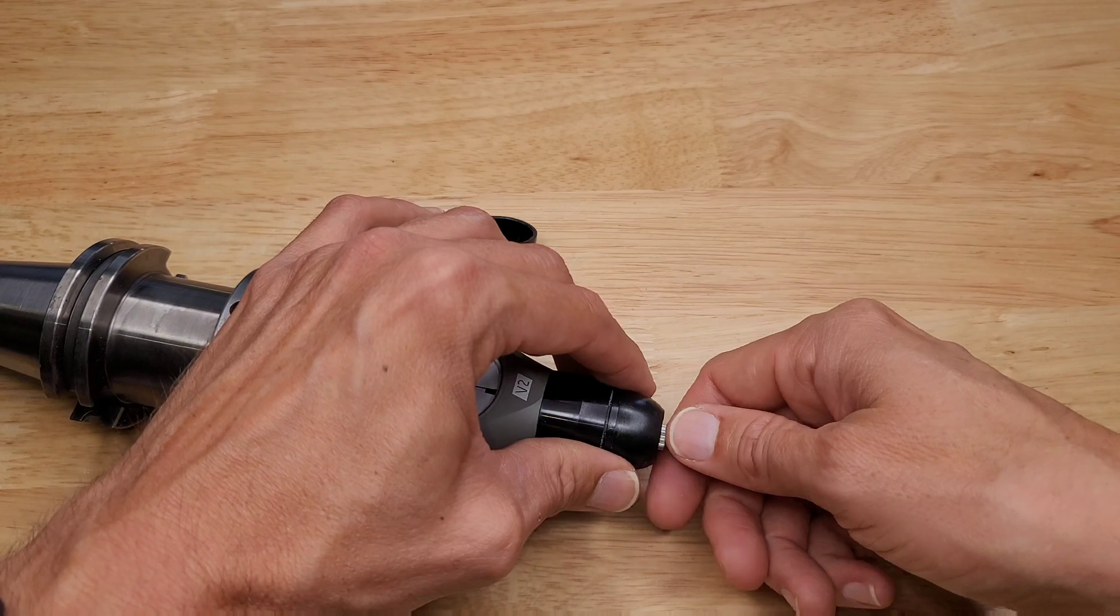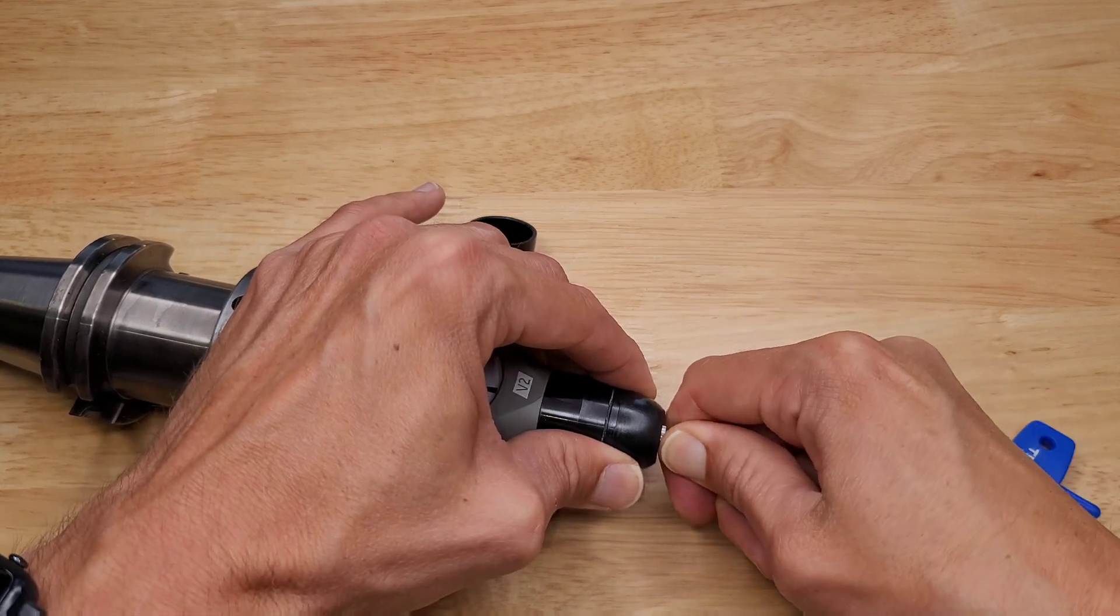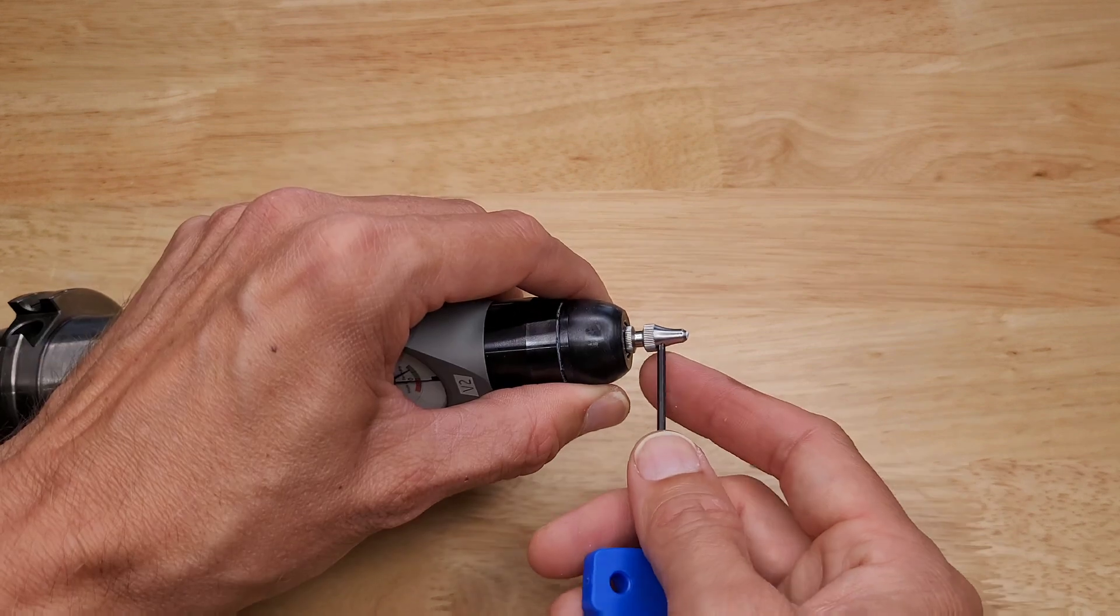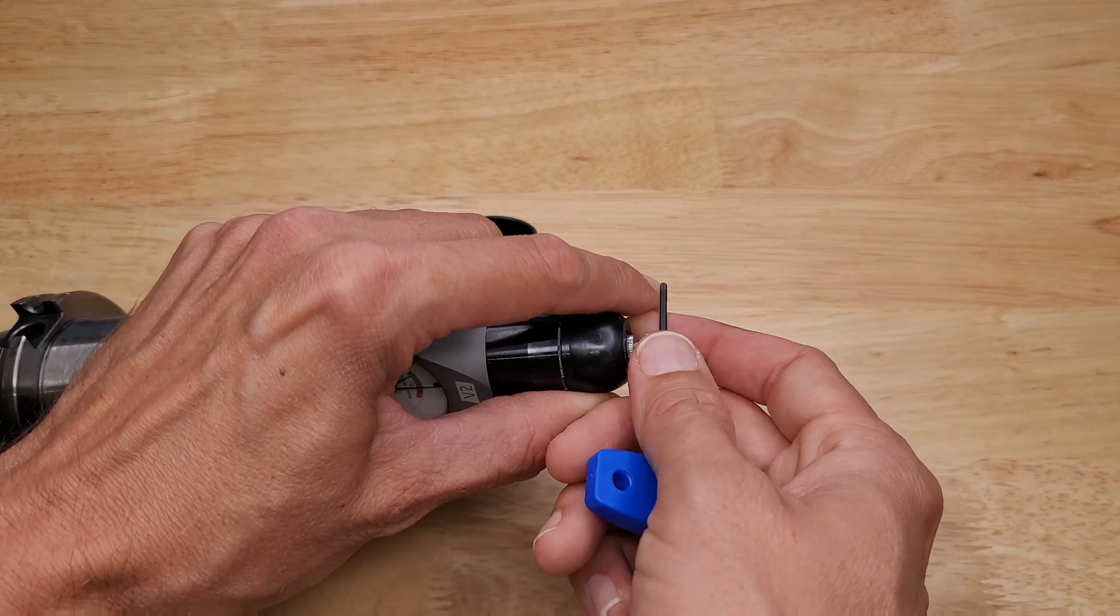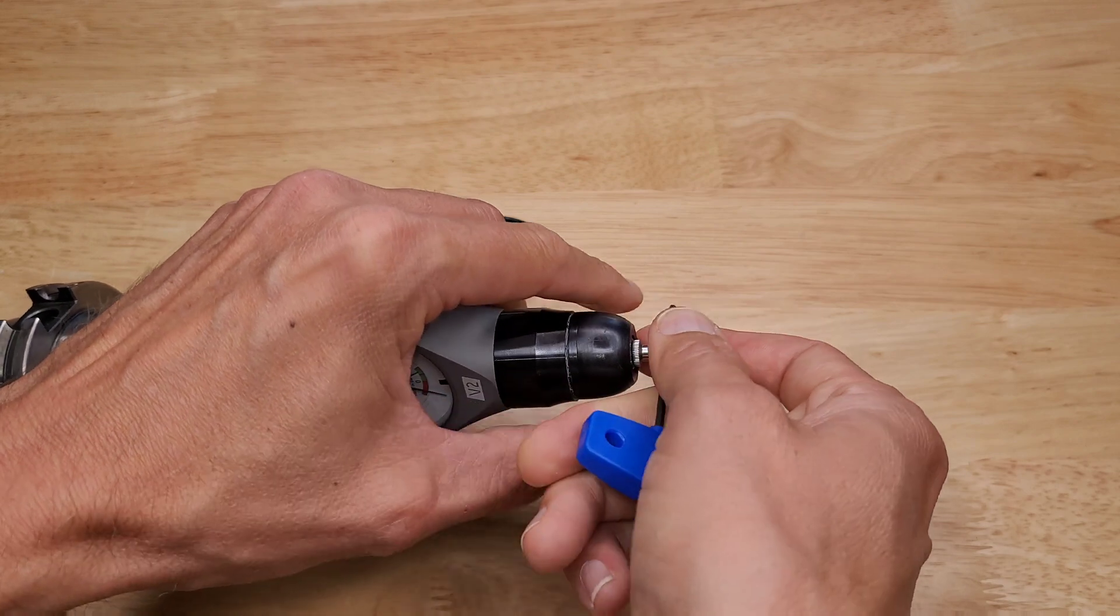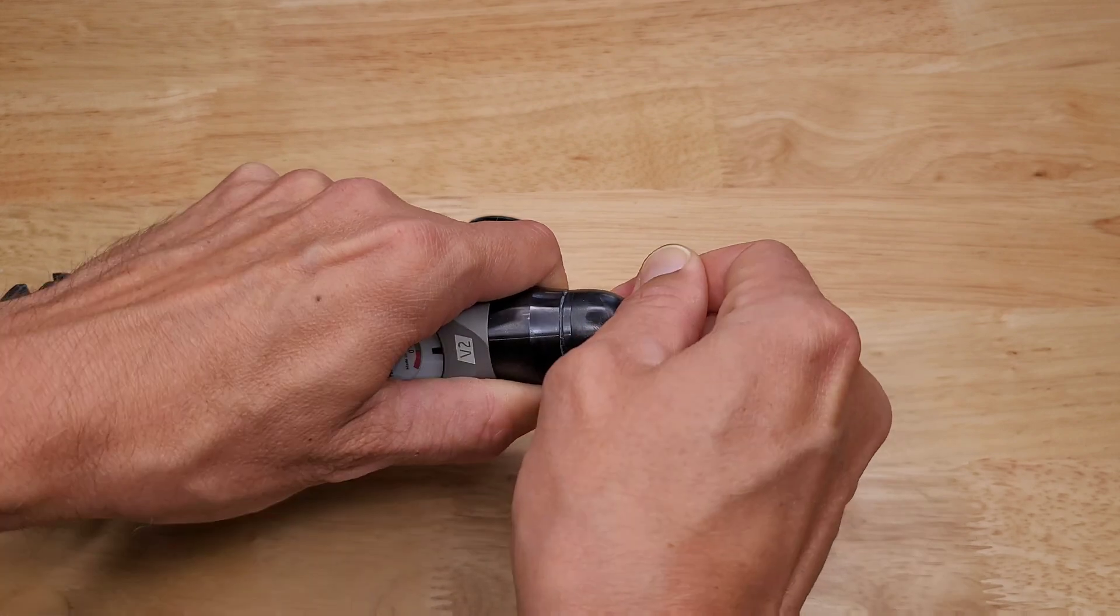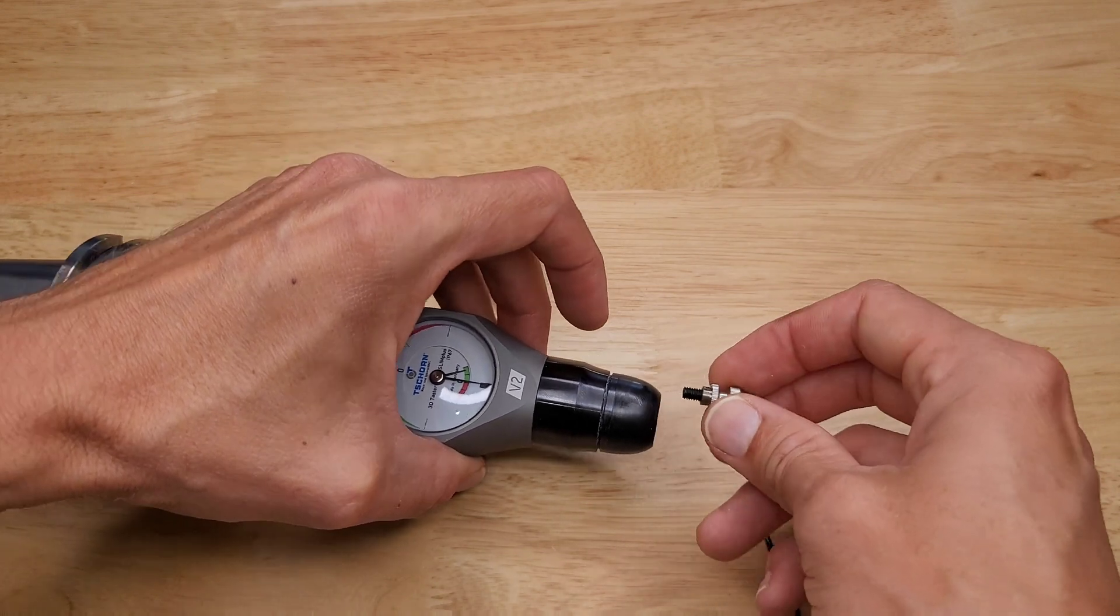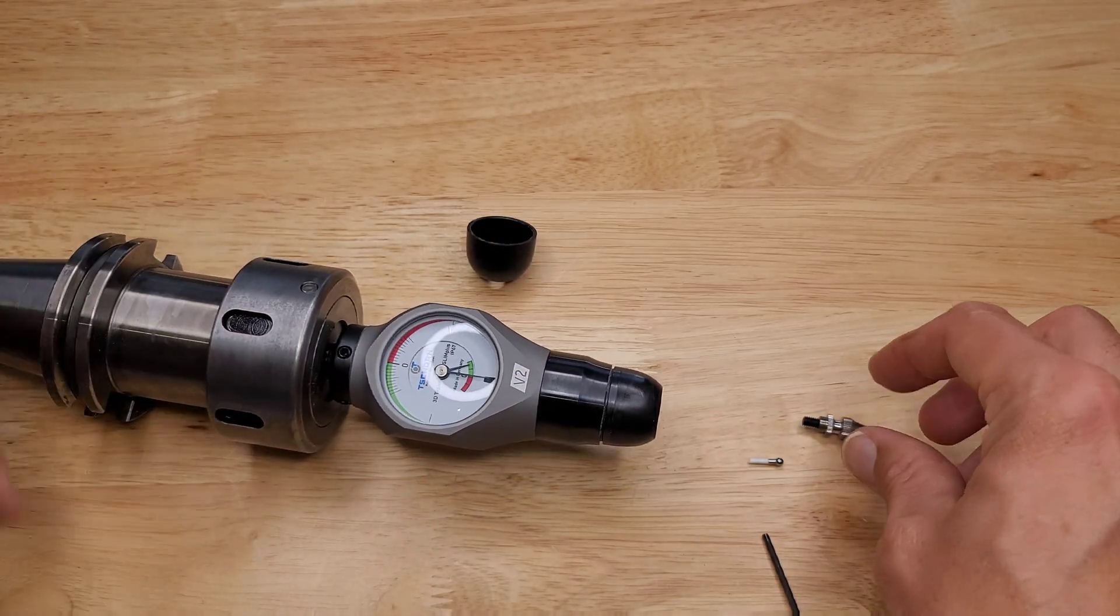Now unscrew the probe tip, and if you can't do it by hand, you can use the tool that's included. You put it through this hole, and carefully unscrew the tip. I feel like there's more force. There we go. Okay. There's a set screw in there that screws into the inside.